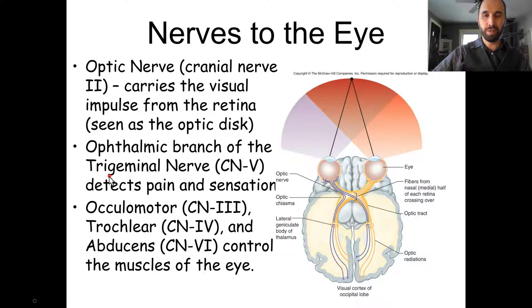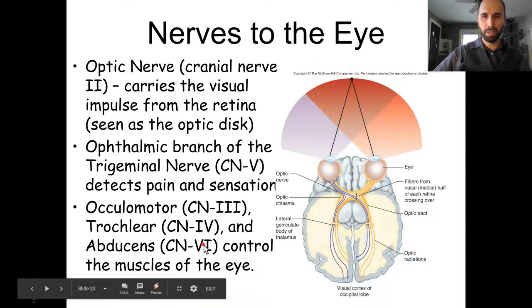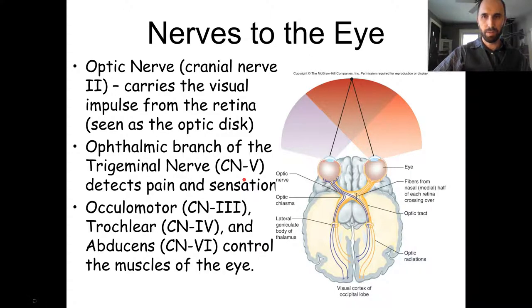The trigeminal nerve's ophthalmic branch — cranial nerve five — provides sensory input to the eye area. The facial nerve is cranial nerve seven. The motor nerves controlling eye movement: oculomotor nerve (cranial nerve three) does the vast majority of work.